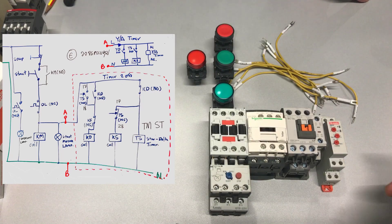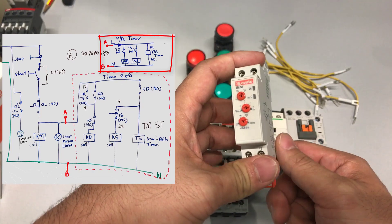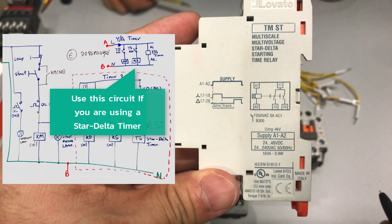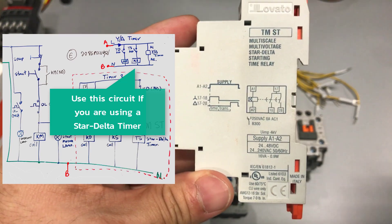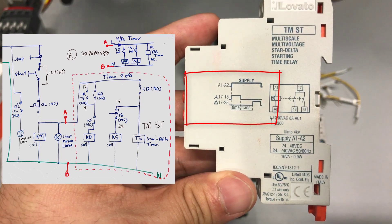Let's take a look at the specific function of a timer that is designed for the star delta application. You can see more information from the diagram on the side of the timer. This timer is from Lovato Electric, TMST series.